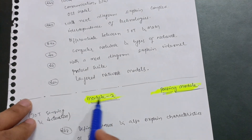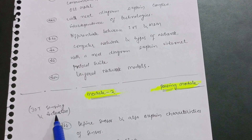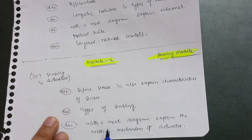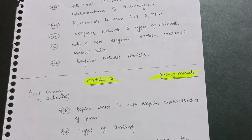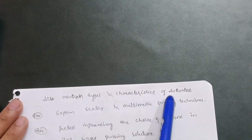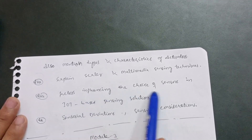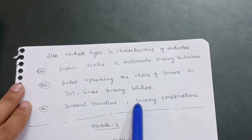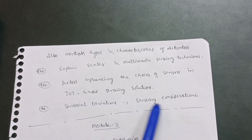Now let us discuss the second passing module, which is Module 2 — IoT Sensing and Actuation. In this you have to cover: define sensor and explain characteristics of sensors, types of sensing, and with a neat diagram explain the working mechanism of an actuator. It is also a diagrammatic module, so focus more on the diagrammatic part. Also mention types and characteristics of actuators, explain scalar and multimedia sensing techniques, and the most important one — factors influencing the choice of sensors in IoT-based sensing solutions. Also go through sensorial deviations and sensing considerations.